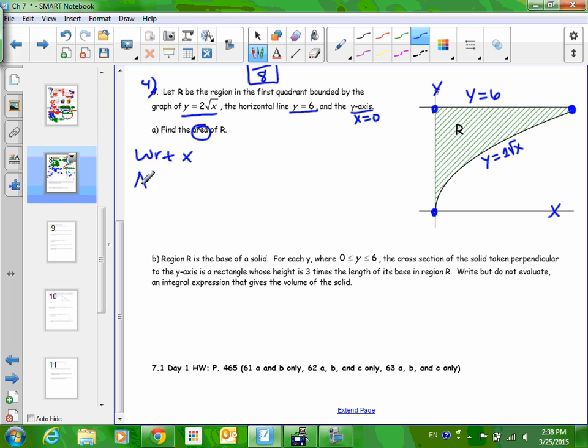So remember when you're doing area with respect to x, this is left to right, top minus bottom, dx. So in our problem, the left, this is the point 0, 0, so 0. What's this point up here?